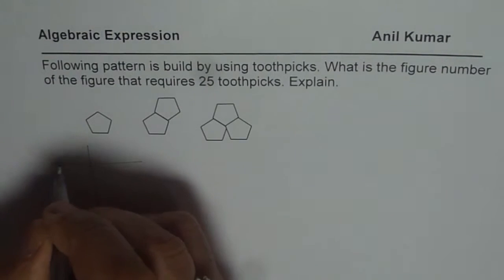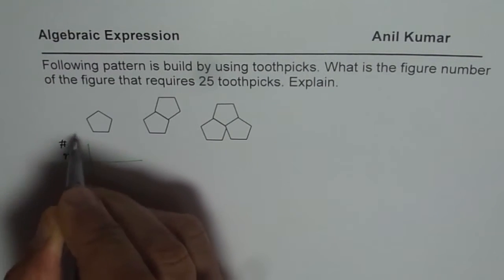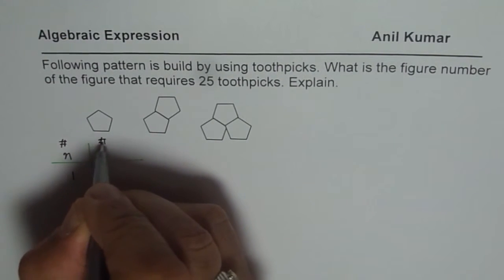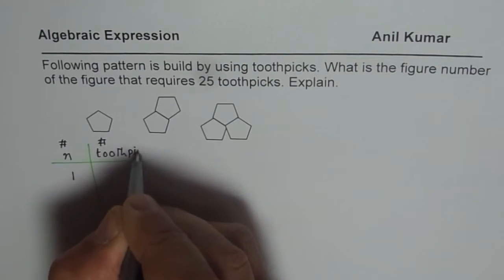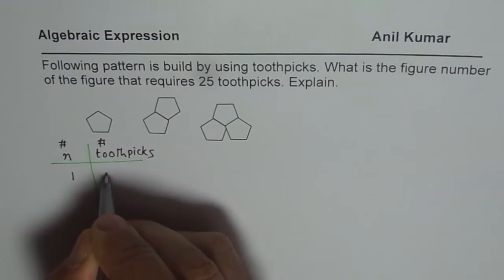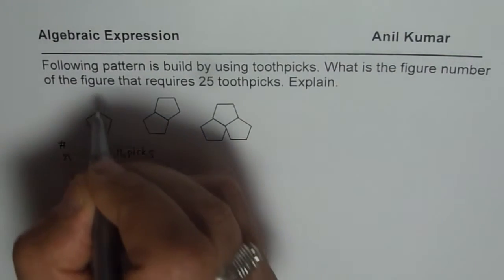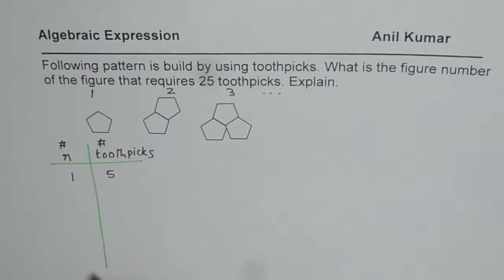So let us say we start with the number of pattern as N. If N is 1, we have number of toothpicks. So that is toothpicks. We can count and write down this as 5. For N equals to 2. So this is 1 for us. This is 2. This is 3. And so on. The pattern will increase.